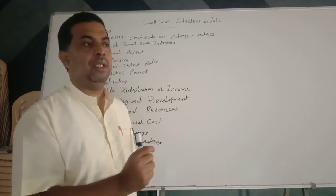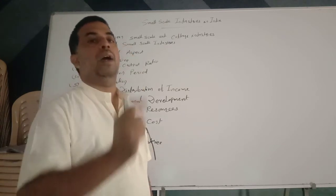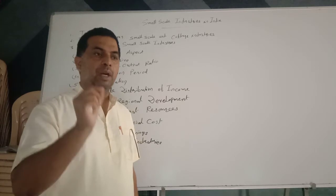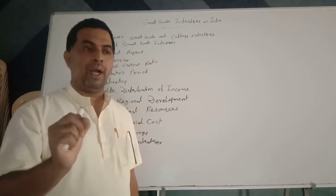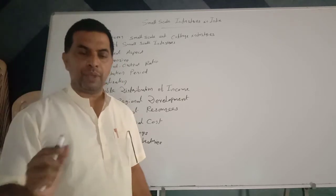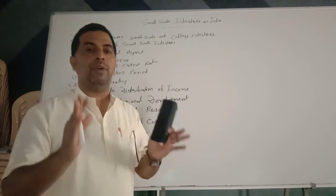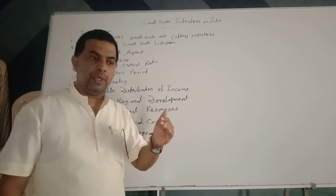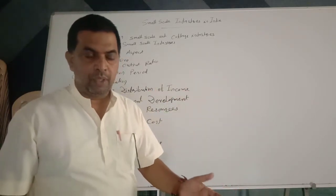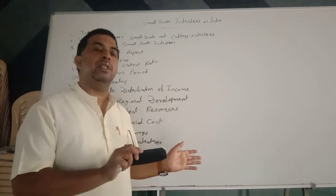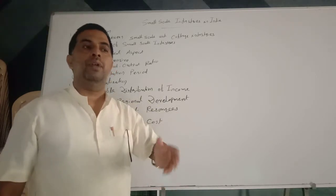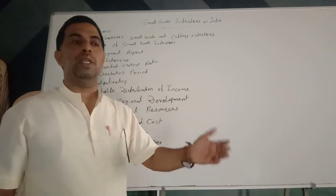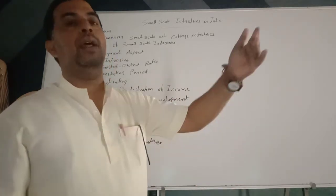Low capital output ratio is another important advantage. Compared to large industries and public sector enterprises where the capital output ratio is very high, in small-scale industries the capital output ratio is low. Capital output ratio means the amount of capital required to produce a given output. Since the capital output ratio is very low in small-scale industries, with a small amount of capital you can start production and adapt to changing market trends.